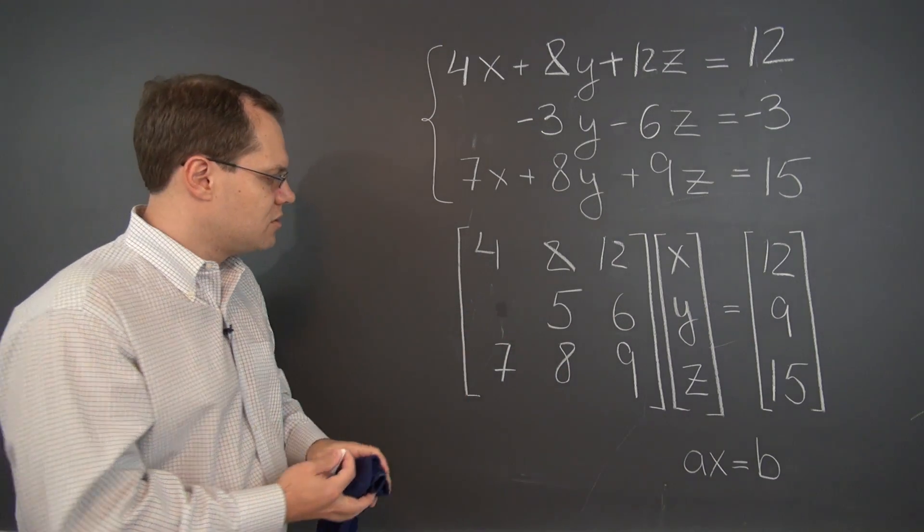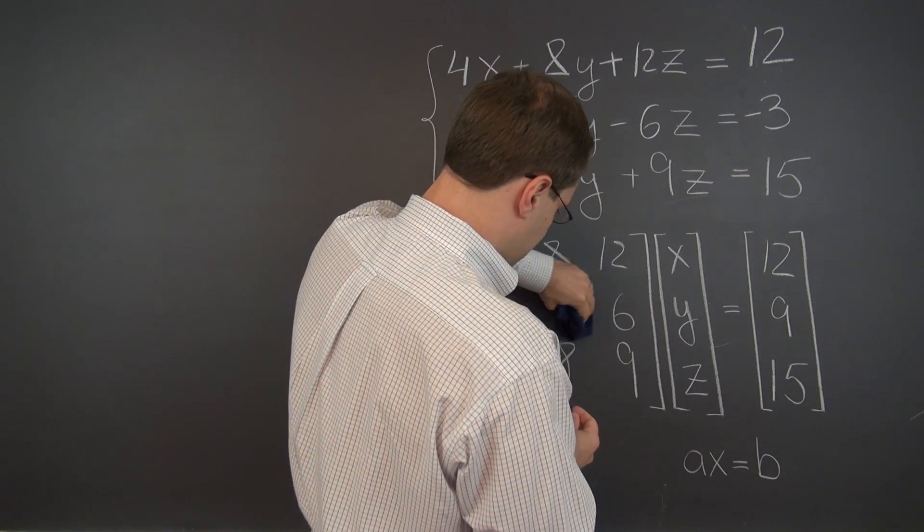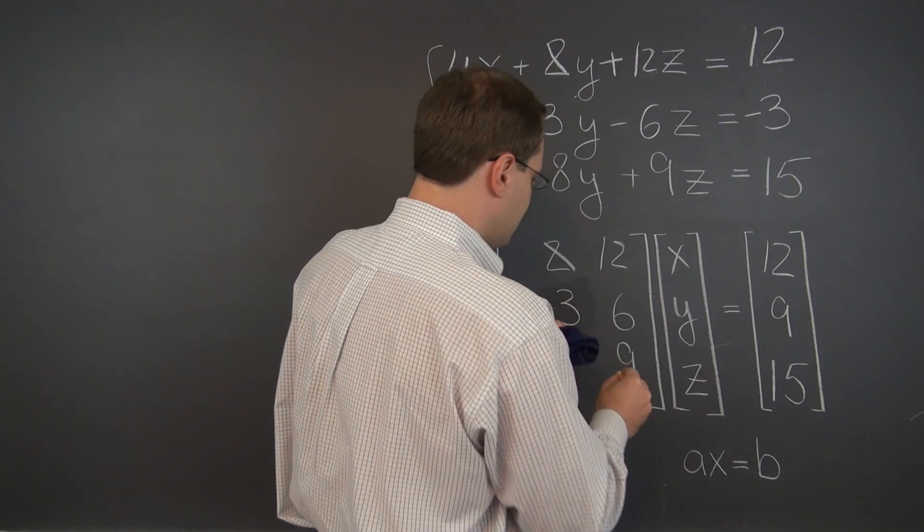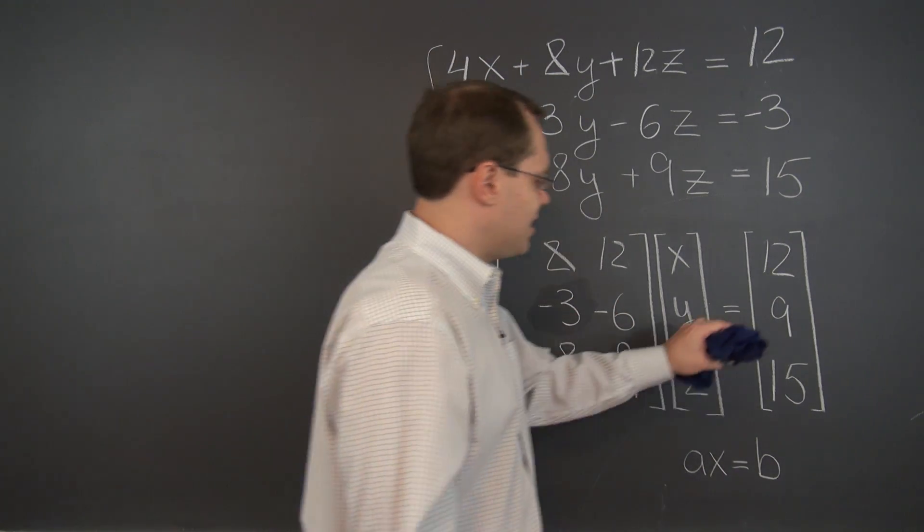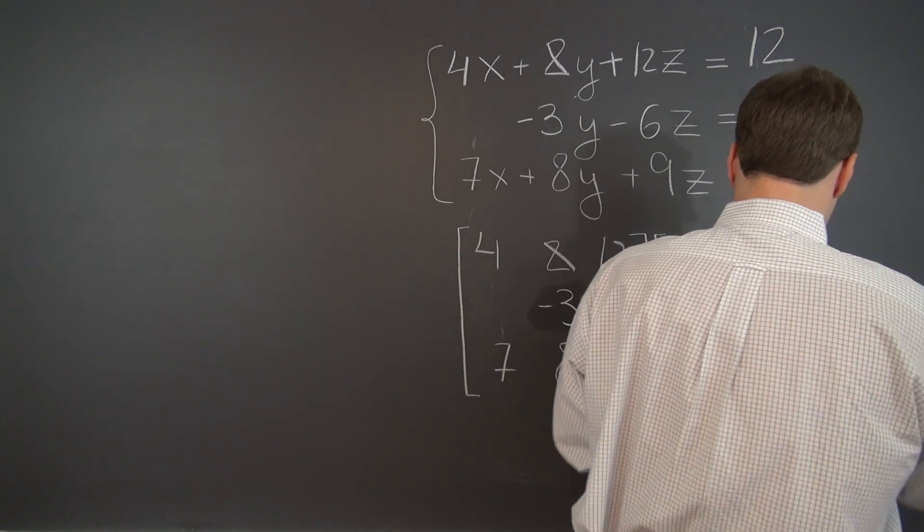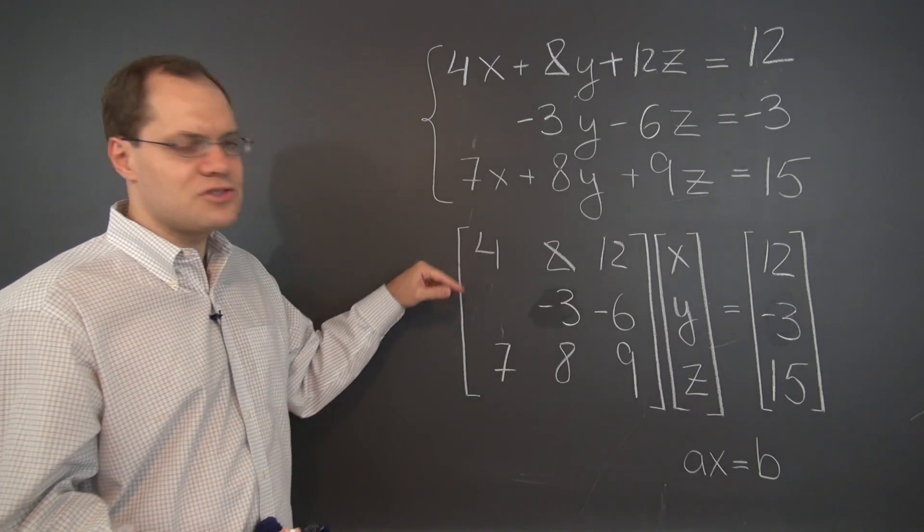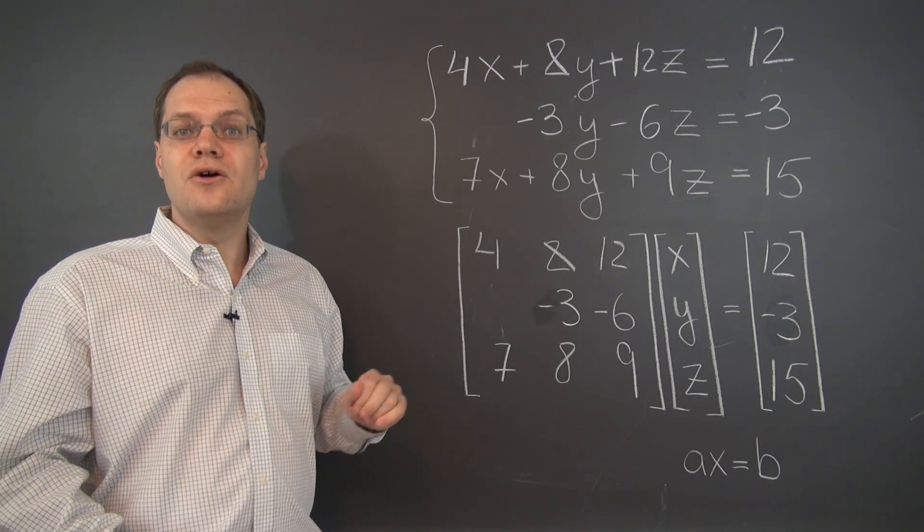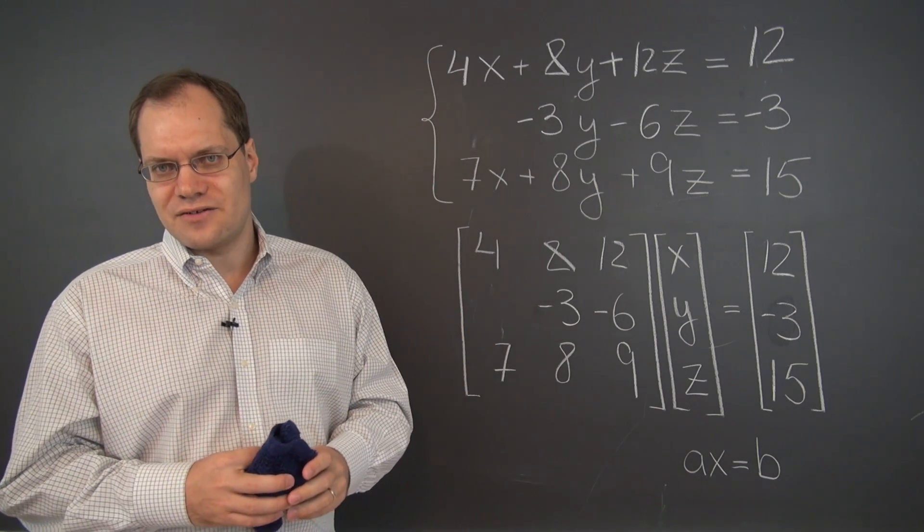So we're just going to leave it blank, meaning 0. The 5 became a minus 3. The 6 became a minus 6. And the 9 became a minus 3. So that's another row operation. Adding or subtracting one row from another. Which only changes the row that's being added to or subtracted from.